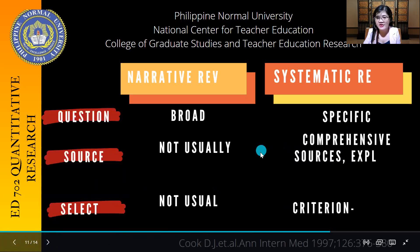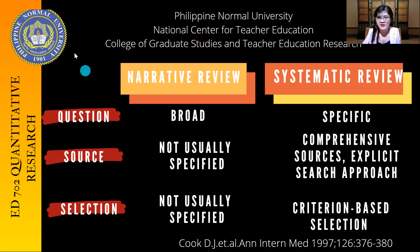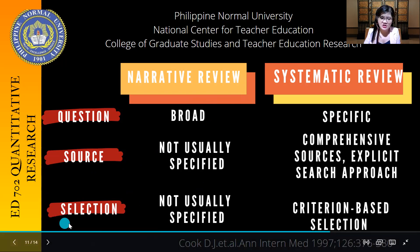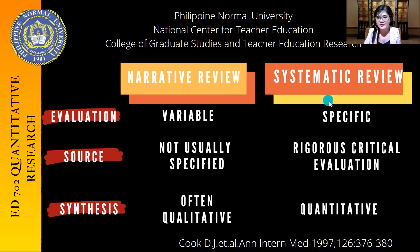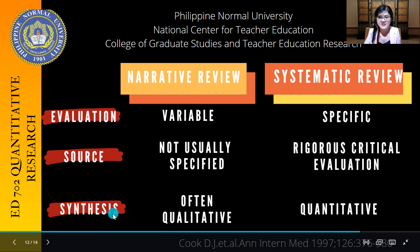Let's differentiate narrative review and systematic review. In terms of question, narrative is more broad while systematic is specific. In terms of source, narrative is not usually specified while systematic uses a more comprehensive and explicit search approach. In terms of selection, narrative is not usually specified but systematic review uses criterion-based selection. For evaluation, narrative review uses variables while systematic review is more rigorous with critical evaluation. For synthesis, narrative is often qualitative while systematic is quantitative.